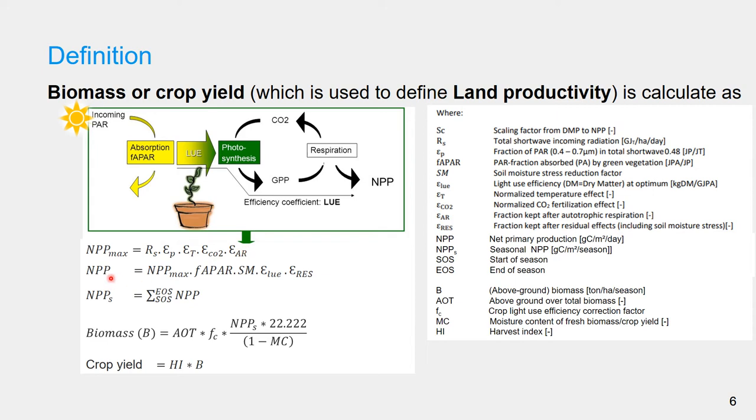The actual net primary production is calculated by multiplying the maximum net primary production by the fraction of absorbed photosynthetic active radiation.